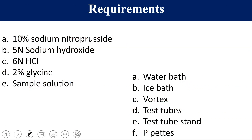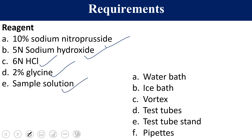The reagents required are: 10% sodium nitroprusside, sodium hydroxide (alkaline), 6N HCl for acidification, glycine for removal of histidine, and the sample solution which is your methionine solution. Equipment required includes a water bath, ice bath, vortex, test tubes, test tube stand, and pipettes.